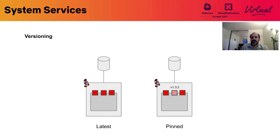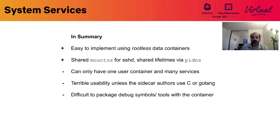In summary, system services are pretty easy to implement using rootless containers. We get the benefit of being able to share mount and PID namespaces, so when a user logs into a container they see a process tree and file system layout that makes sense. But we can only have one user container in our model and we want to have more user containers to move towards more composable workloads.